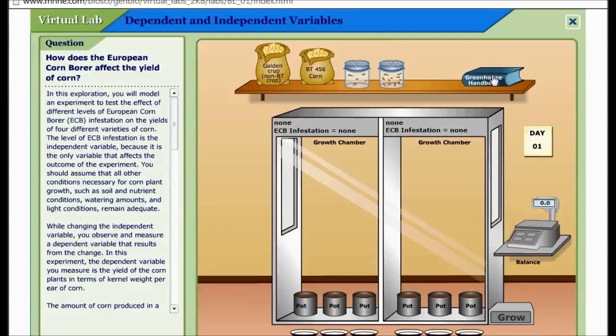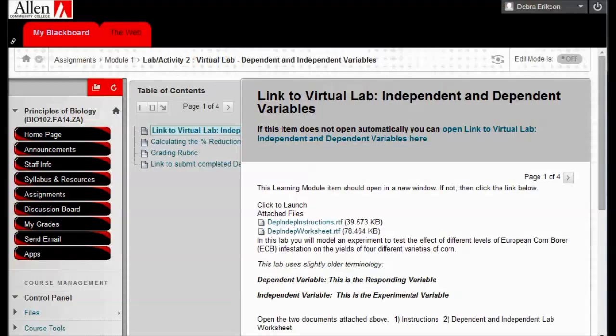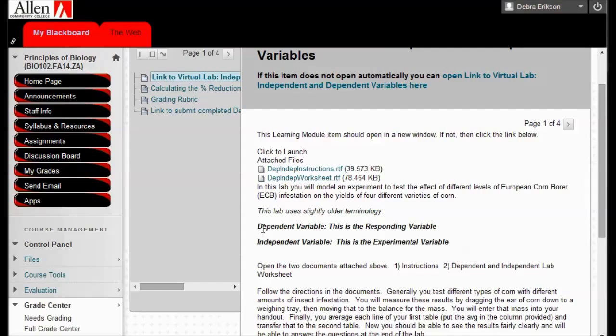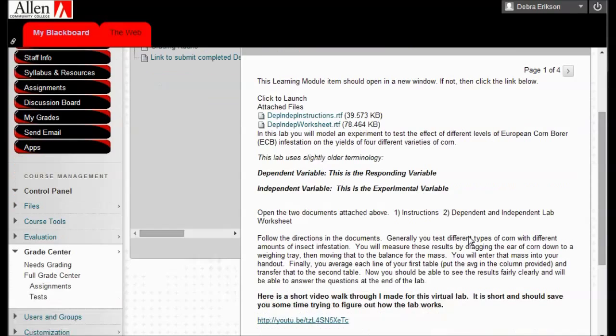So let's talk about a couple of things here that were underneath that after it opened in a new window. There's the two things we just opened. Then, dependent variable is the responding variable in your book. They're using kind of older terminology. The independent variable is the experimental variable in your book. That should help you see that.